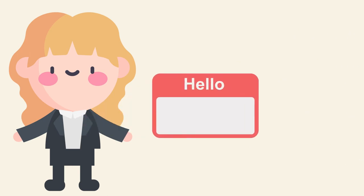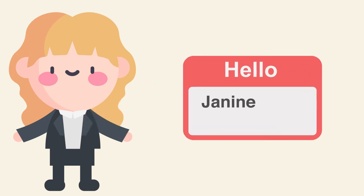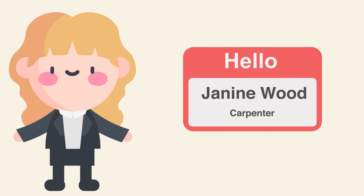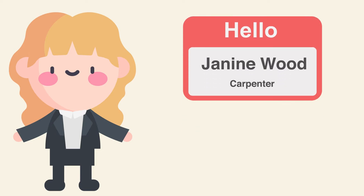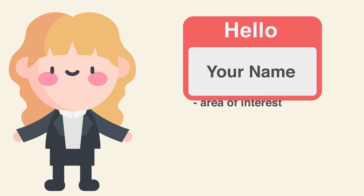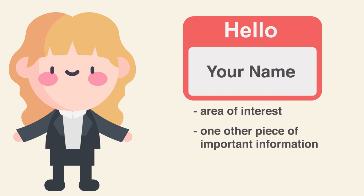We're going to begin by introducing ourselves to the readers. Tell them who you are and what you do. This should be the first sentence of your introduction, short and to the point, including your name, your area of interest — like your field of study or the job you're hoping to attain — and one other piece of important information about yourself, like the city you're based in or the school you graduated or will graduate from.